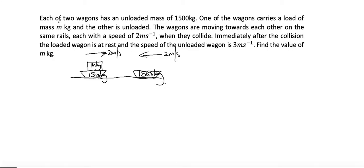Two wagons have an unloaded mass of 1500 kg. One wagon carries a load of m kg — I'll label that one at A — and the other at B is unloaded. The wagons are moving towards each other at two meters per second. When they collide, immediately after the collision the loaded wagon is at rest and the speed of the unloaded wagon is three meters per second.